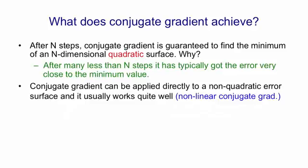You can apply conjugate gradient directly to a non-quadratic error surface like the error surface for a multi-layer non-linear neural net and it usually works quite well. It's essentially a batch method but you can apply it to large mini-batches and when you do that you do many steps of conjugate gradient on the same large mini-batch and then you move on to the next large mini-batch. That's called non-linear conjugate gradient.